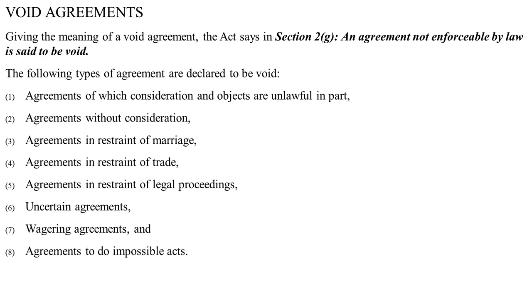As you can see on your screen right now, regarding void agreements: Section 2(g) says that an agreement not enforceable by law is said to be void. The following types of agreements are declared void: (1) agreements of which consideration and objects are unlawful in part, (2) agreements without consideration, (3) agreements in restraint of marriage, (4) agreements in restraint of trade, (5) agreements in restraint of legal proceedings, (6) uncertain/unmeaning agreements, (7) wagering agreements, and (8) agreements to do impossible acts.